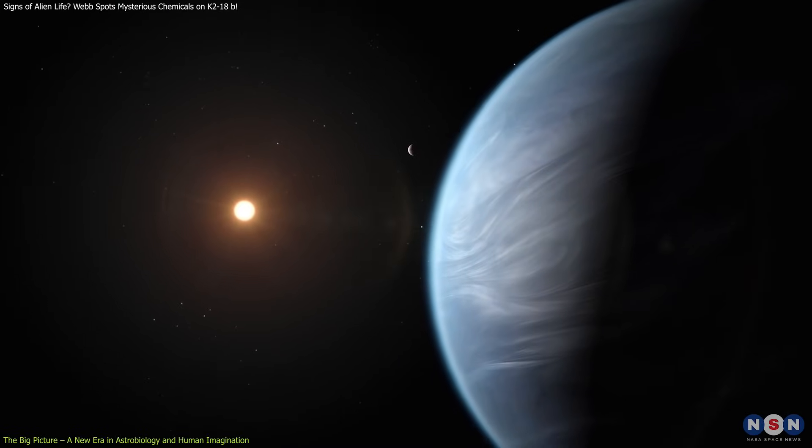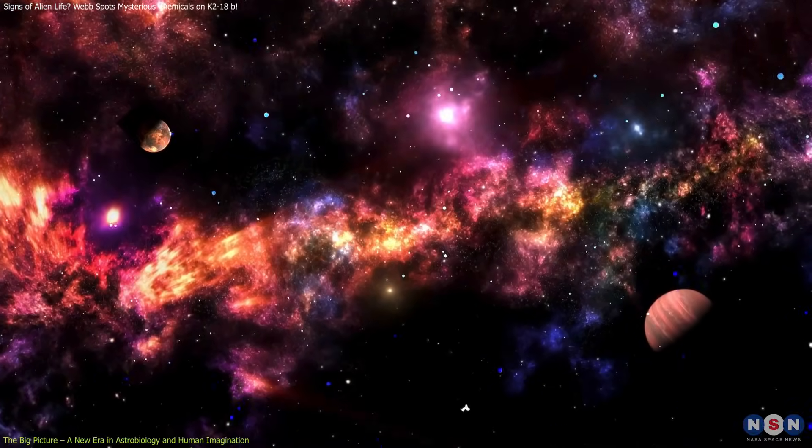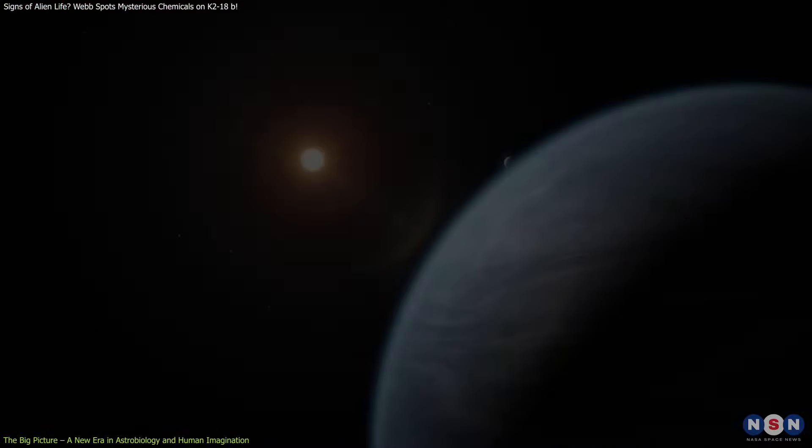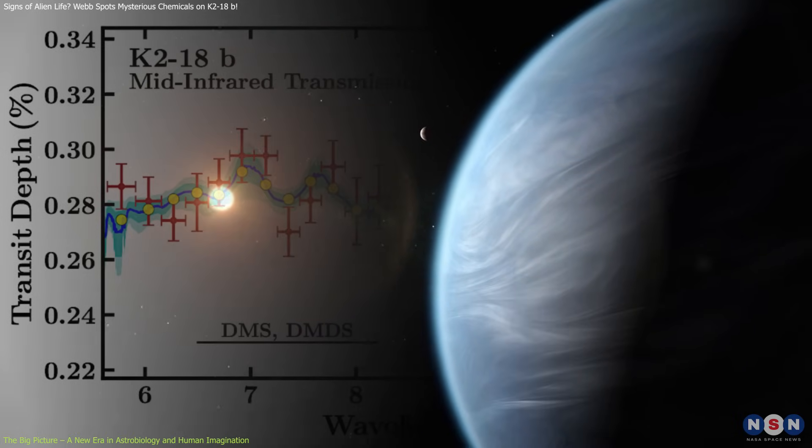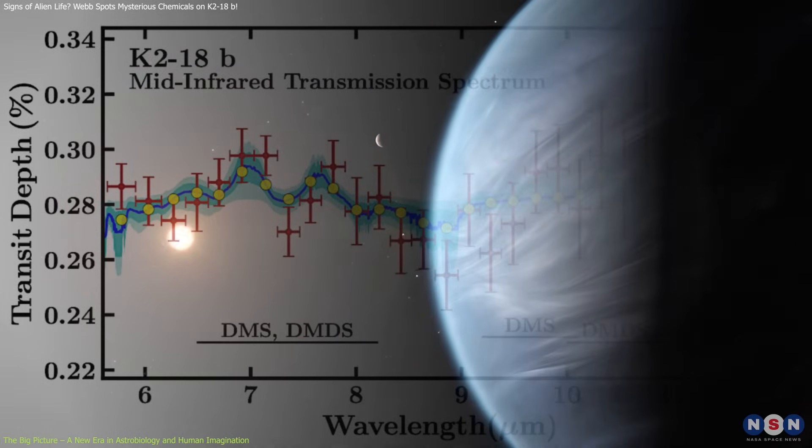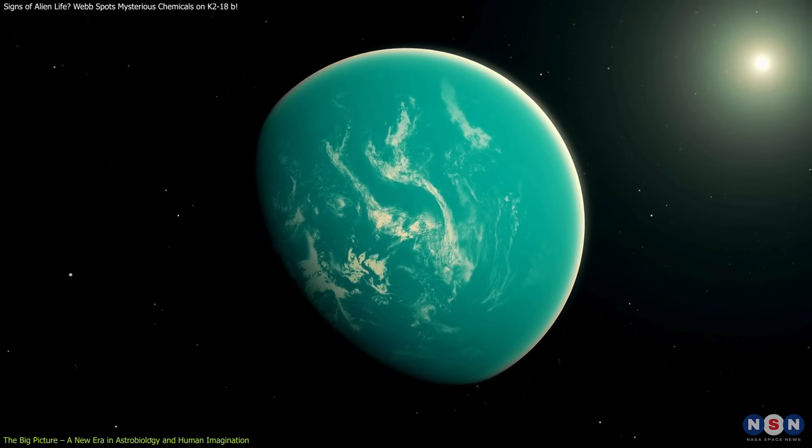Regardless of the final verdict on K218b, the discovery is changing the way we approach the search for life in the universe. This marks the first time that potentially biological molecules have been identified in the atmosphere of a planet orbiting in the habitable zone, and it's not even an Earth-like world.